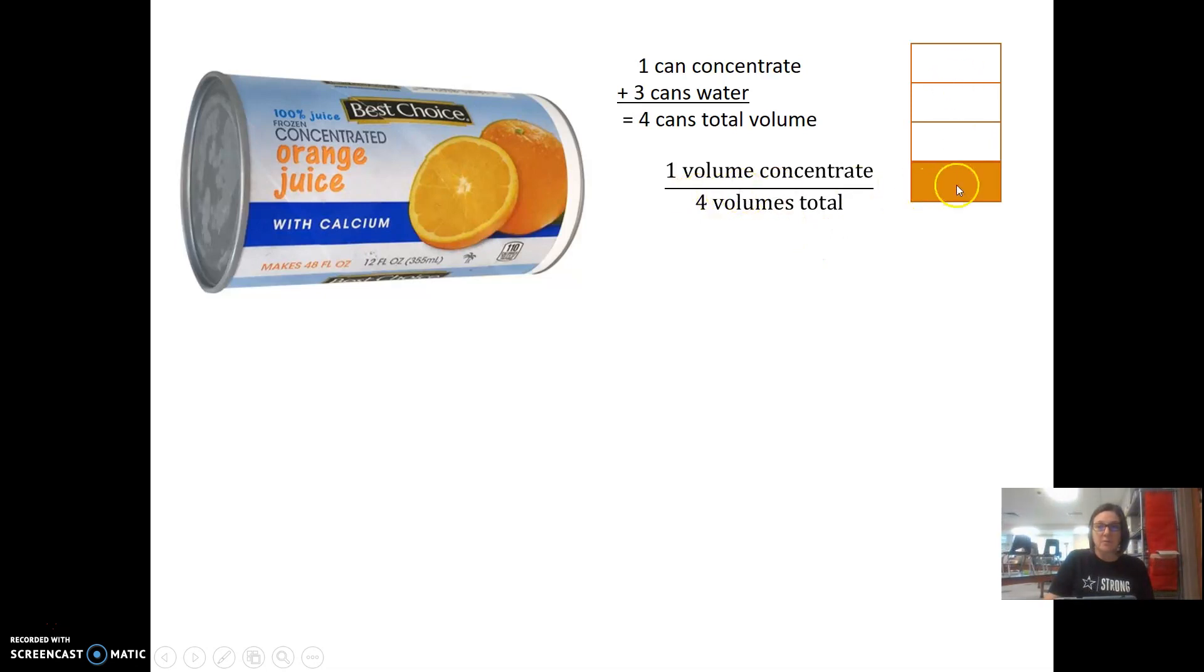One volume of the four is concentrate. So you could also look at it over here on the label. They say that it's 12 ounces of concentrate in this can but it makes 48 fluid ounces total. So if you simplify that by dividing both of those by 12, you get one out of four.